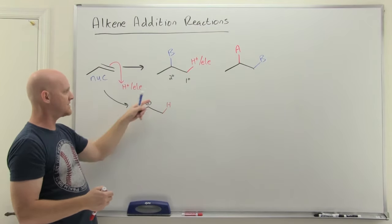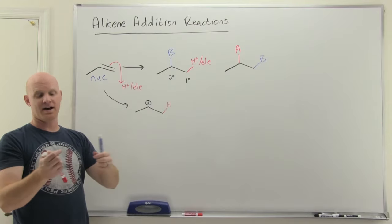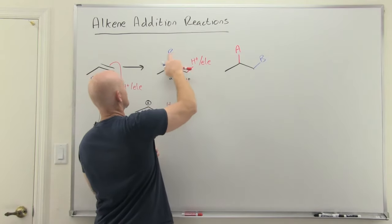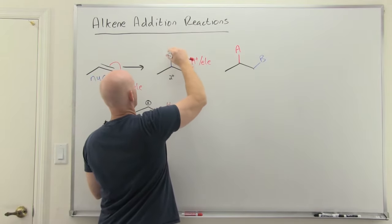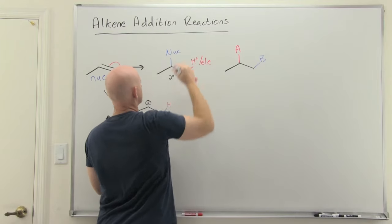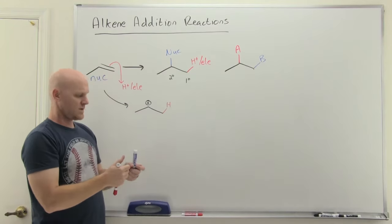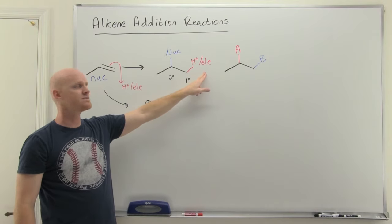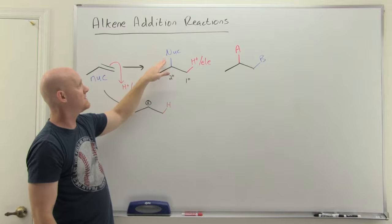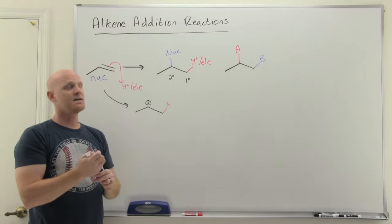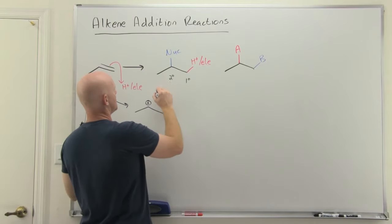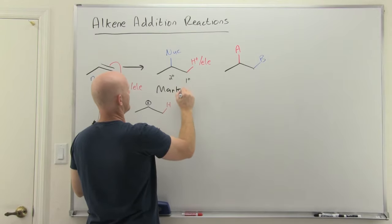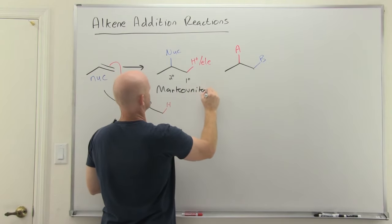Well, it turns out in the next step, a nucleophile is now going to come attack the carbocation and attach there. And so B here, it turns out, is going to be some variety of nucleophiles. And we'll leave that generic here for a little bit. And it turns out as long as you add the hydrogen or electrophile on the less substituted side and the nucleophile on the more substituted side,